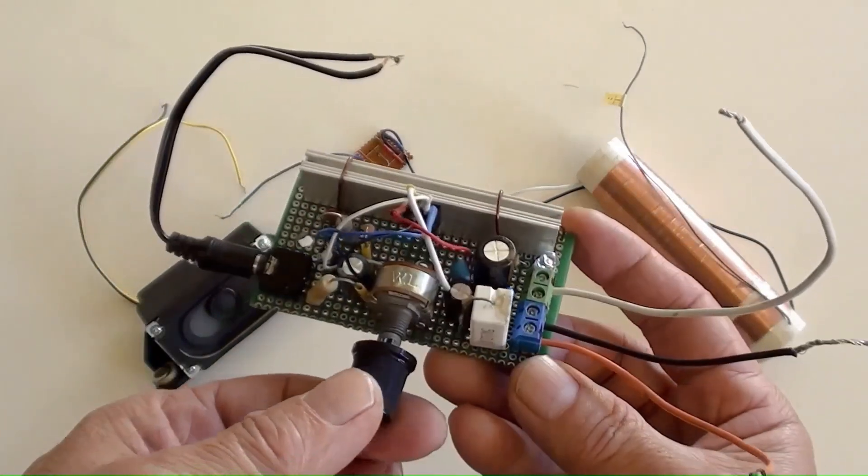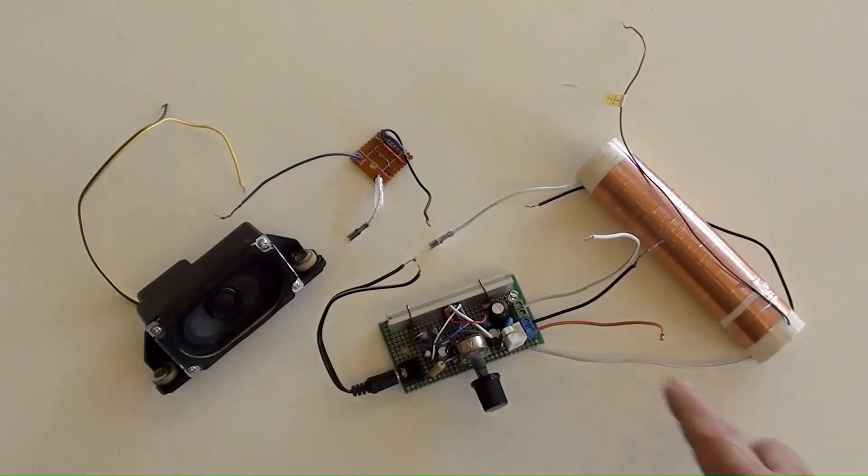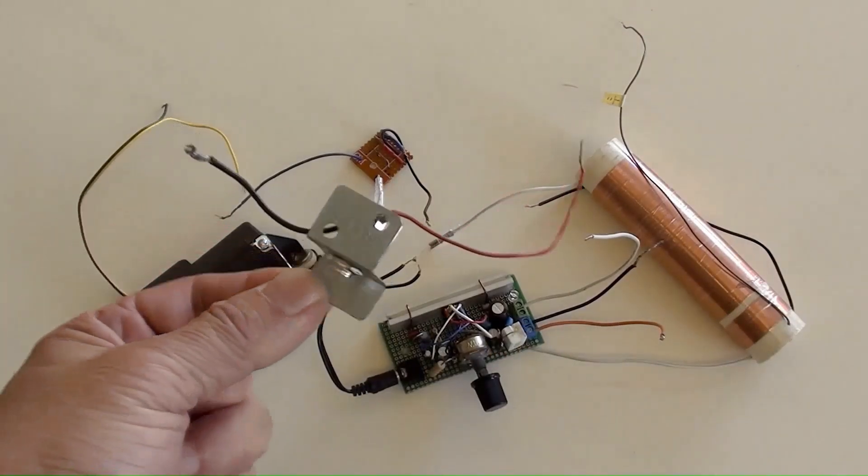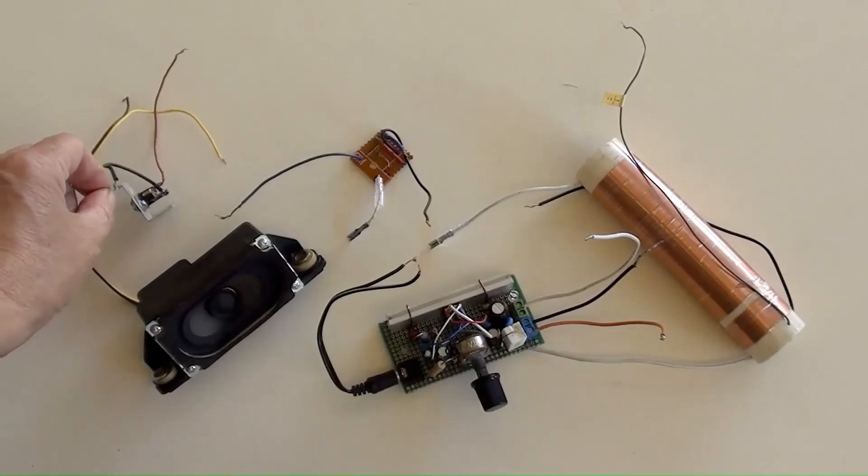This is for adjusting audio volume. The amplifier's DC power socket is here. It can be supplied with DC 6V to DC 15V.